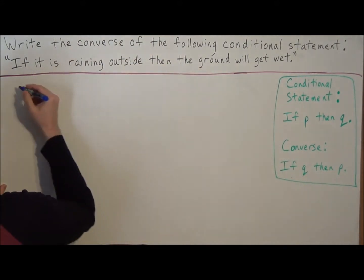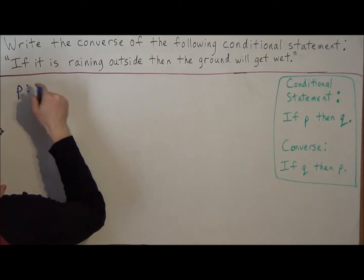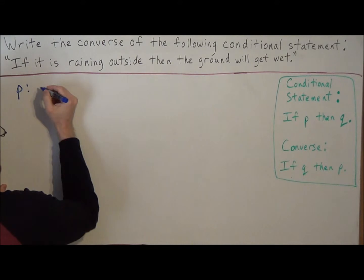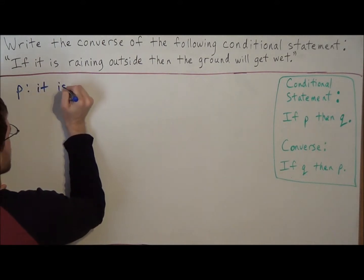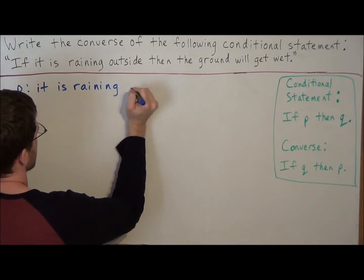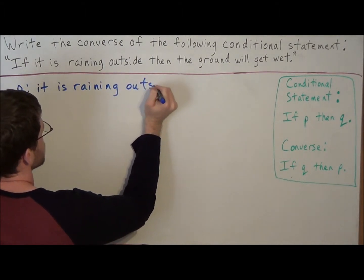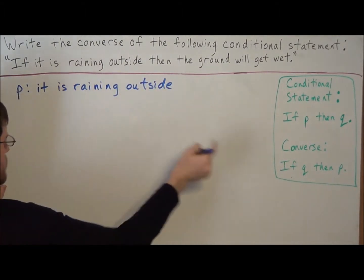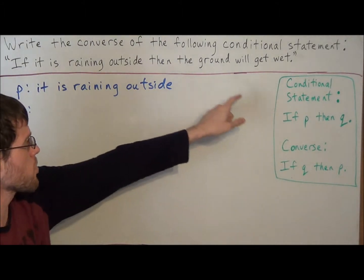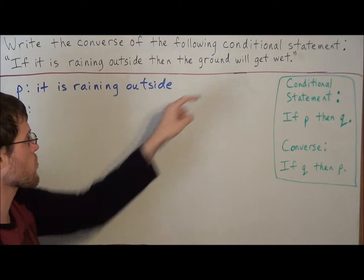Looking at our conditional statement, the hypothesis comes after the word 'if': it is raining outside. So we have p: it is raining outside. To identify our conclusion, which we're calling statement q, it comes after the word 'then'. So our conclusion is q: the ground will get wet.